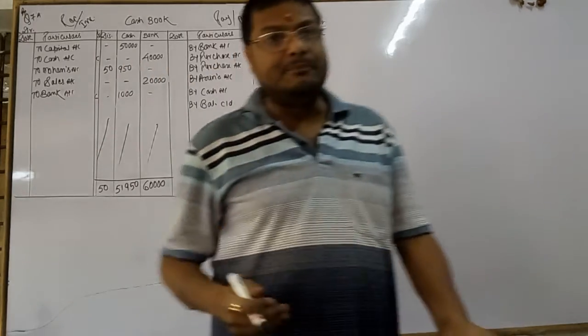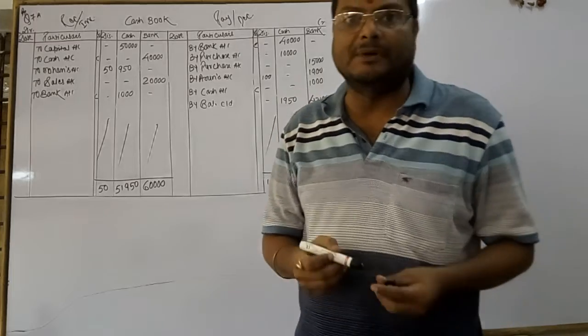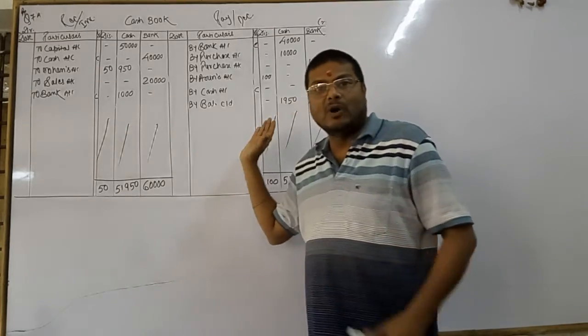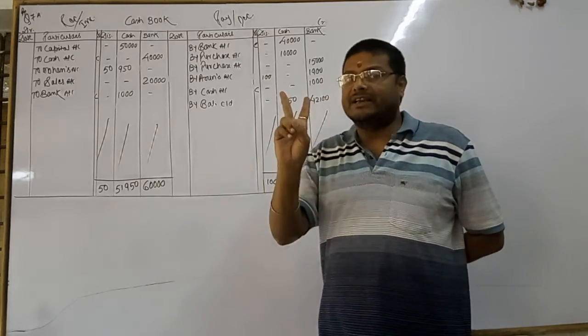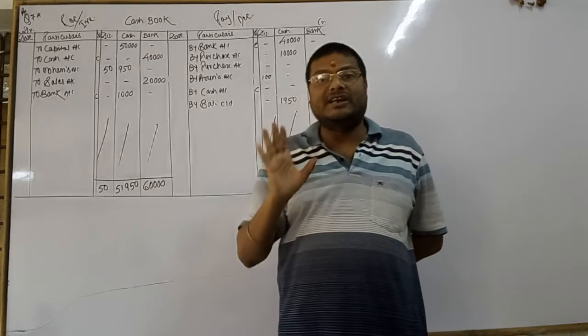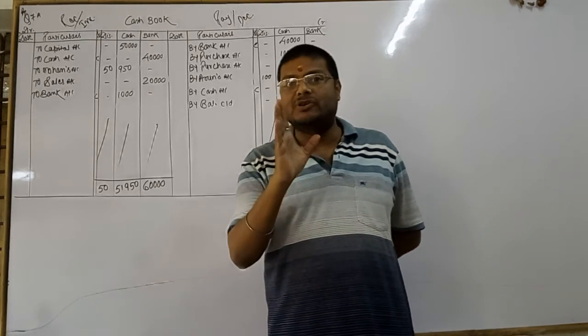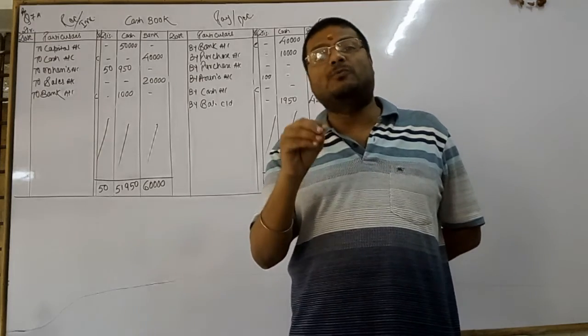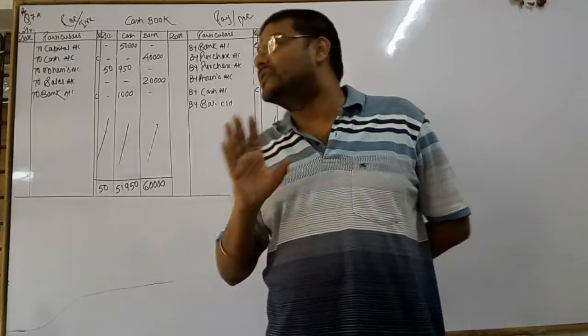Dost, let me repeat the meaning of contra entry. When the transactions are recorded on the both side of cash book are known as contra entry. And how many situations? Two situations. First situation, when cash deposited into bank. Or second case, when cash withdrew from bank for office use.